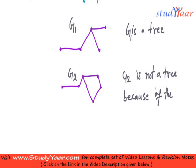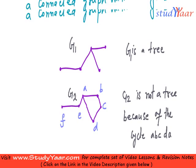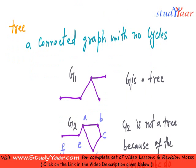So what cycle are we talking about? We are talking about, let us assume I call this A, B, C, G, E and F. Then it is not a tree because of the cycle A, B, C, G, E. So that was a simple definition of tree.